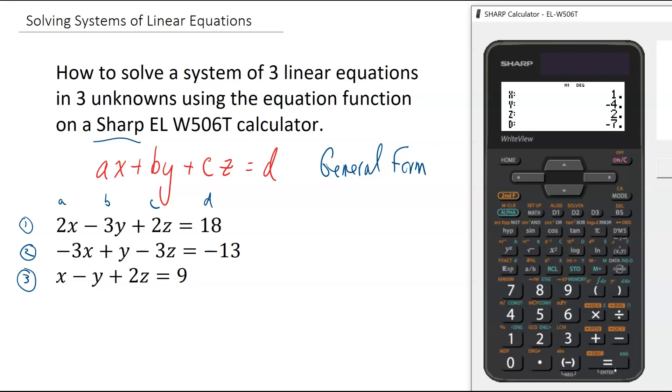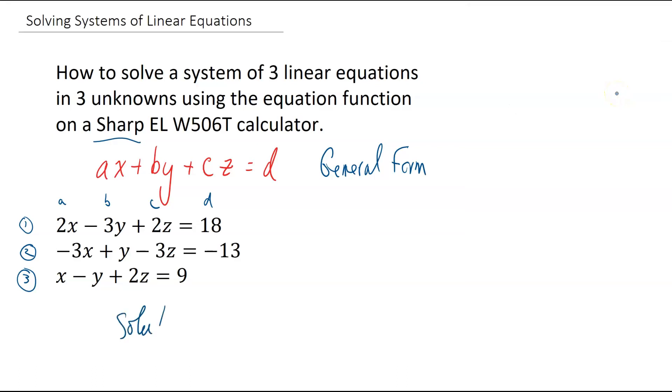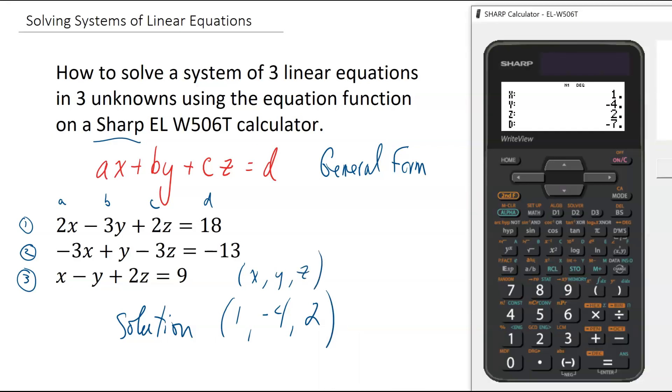And you can see the results are there. X is first, it's a one. Y is negative four. Z is two. We'll write our solution: one, negative four, two for the X, Y, Z. The determinant, if needed, is negative seven.